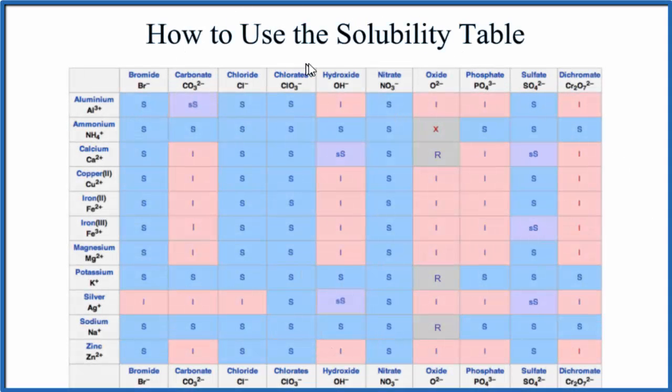In this video we'll look at how to use the solubility table. This is the solubility table here. It's very useful when we're trying to figure out if substances will be soluble in water, if they'll dissolve in water. For example, we use this in net ionic equations or when we're trying to predict whether double displacement reactions will happen.